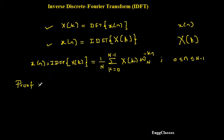So how do I consider the proof? There are two approaches. One is to start with x of n and towards the end arrive at this expression as the proof. Another way is to consider this expression first and towards the end make it equal to x of n, so that I can say this is the expression for x of n — IDFT. The second approach is much easier compared to the first, so we will stick with the second approach.